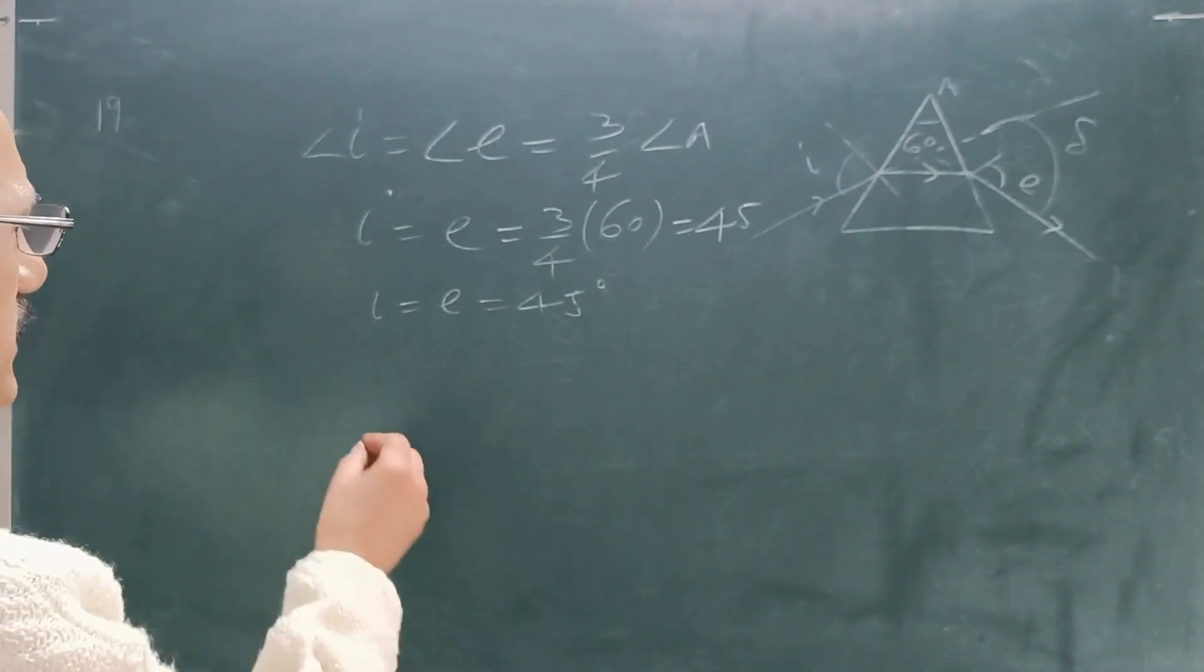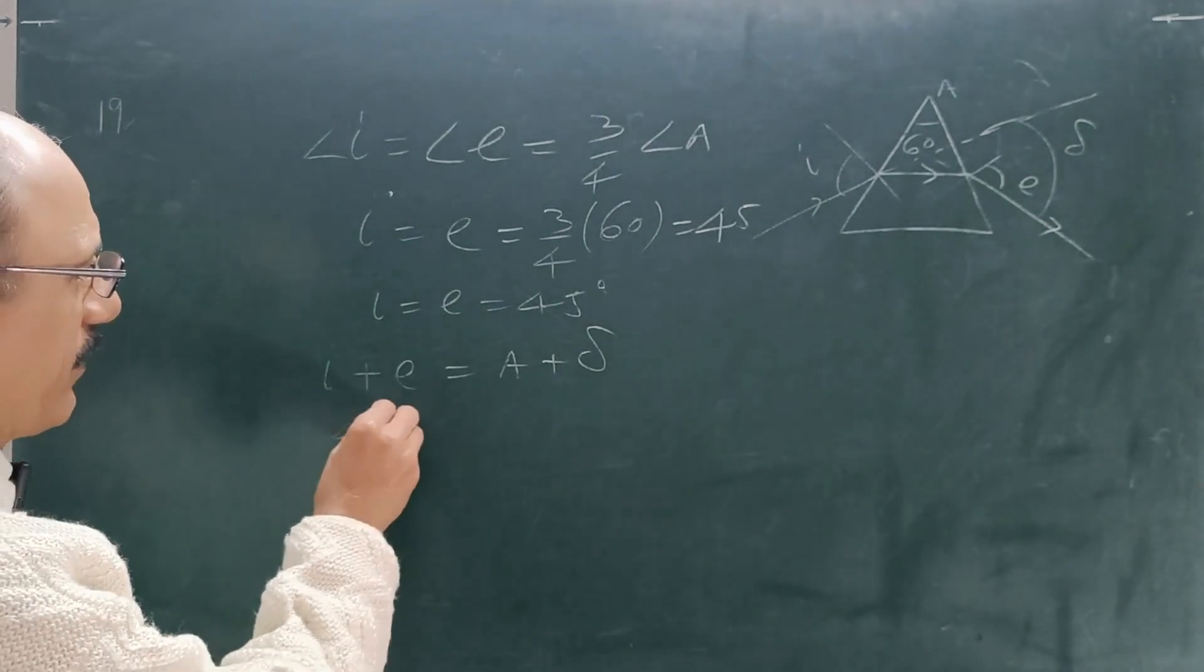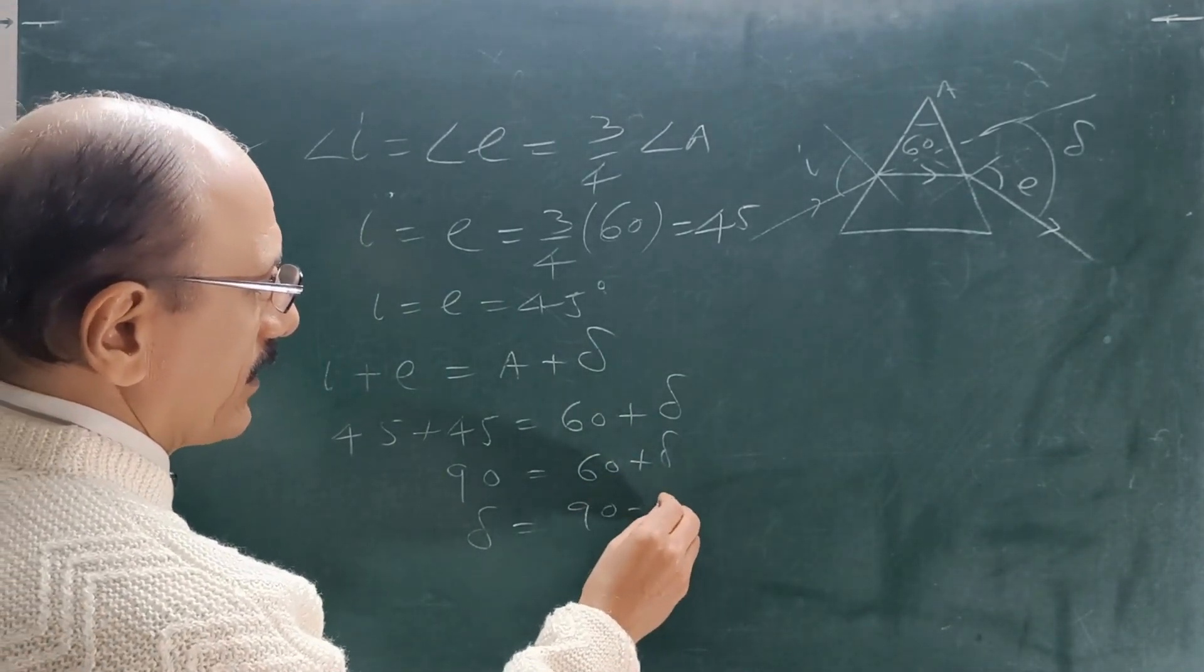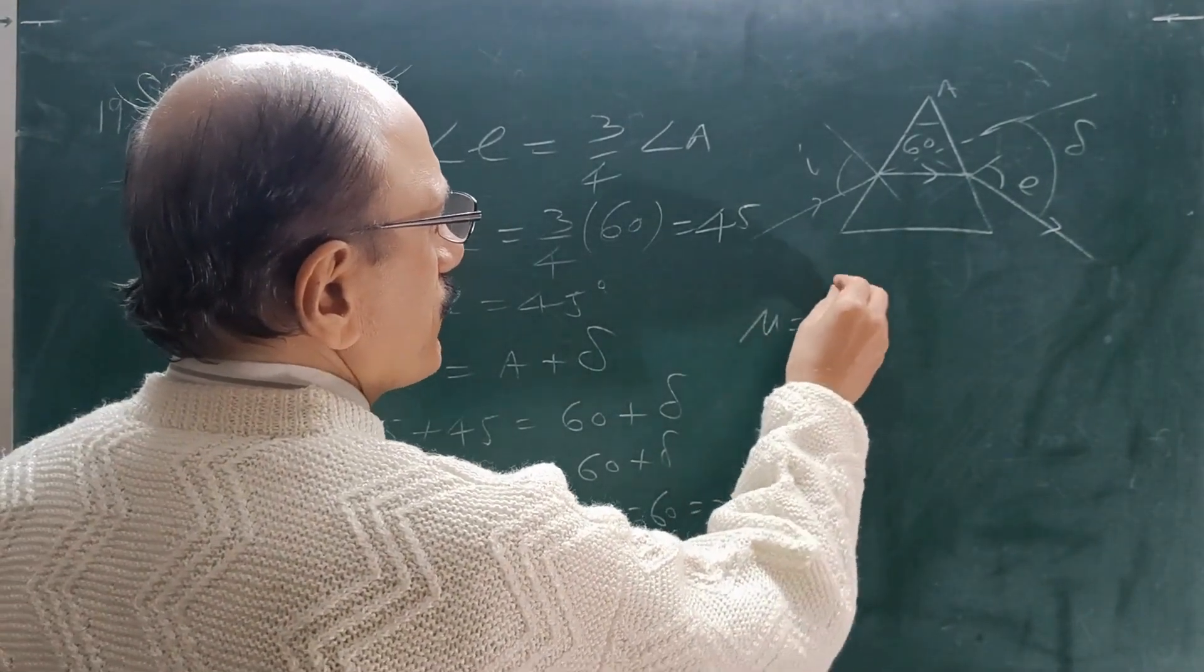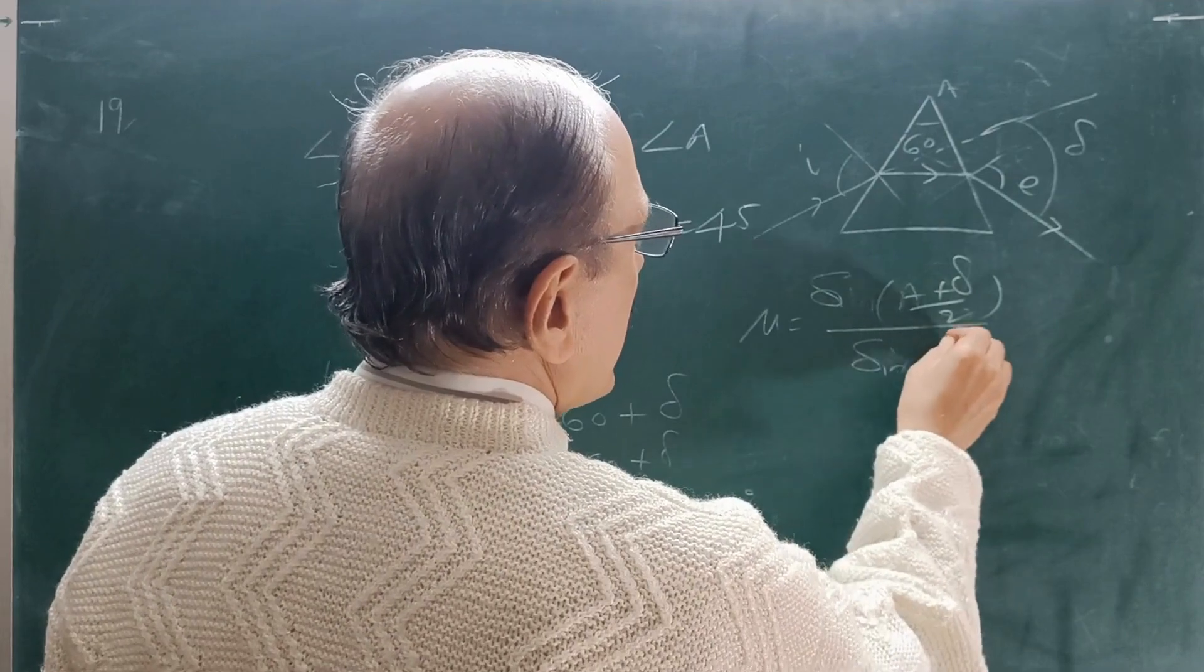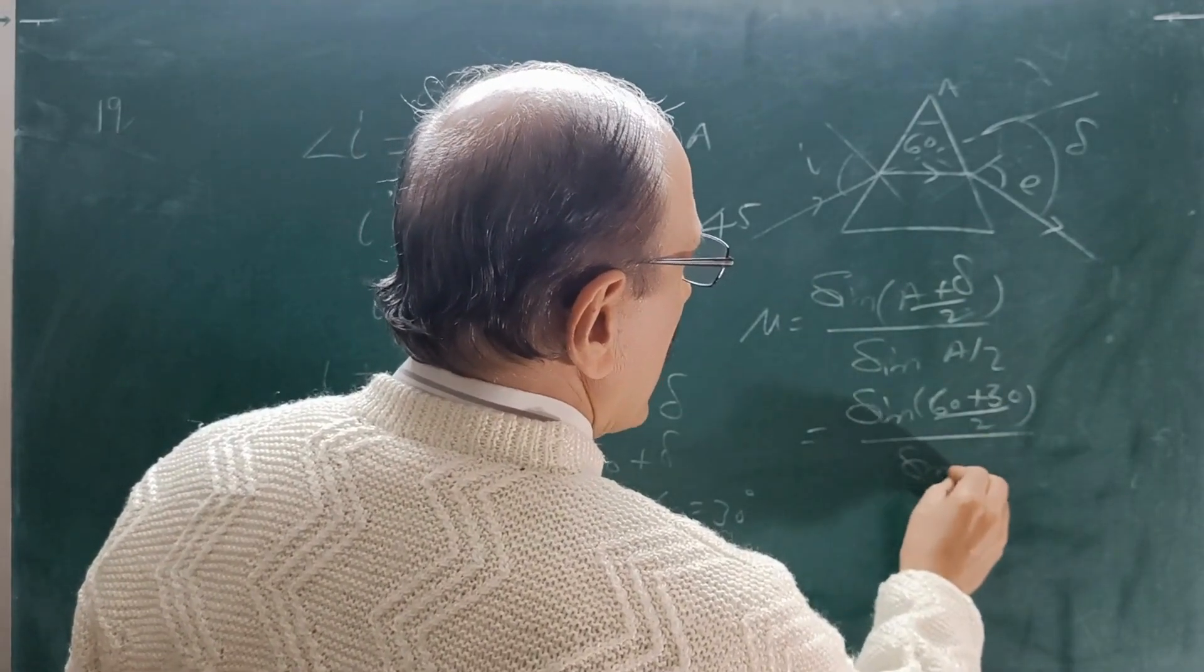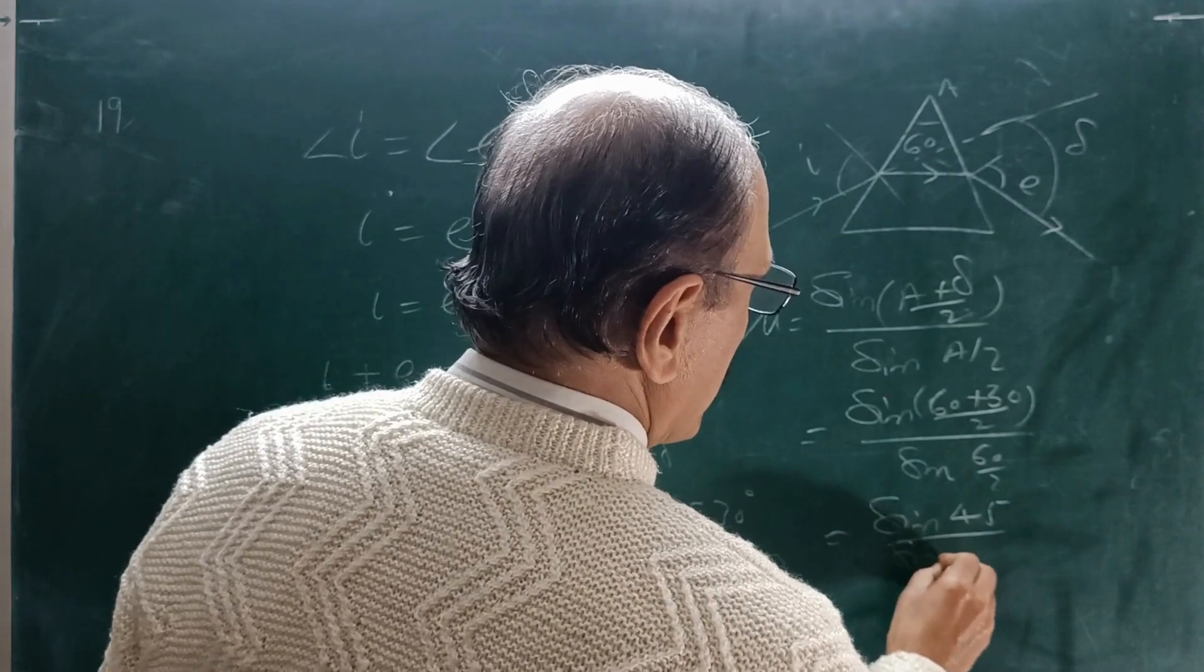Now we know I plus E equals to A plus delta for the prism. So this is 45 plus 45 equals 60 plus delta. So 90 equals to 60 plus delta. So delta equals to 90 minus 60, that is 30 degree.